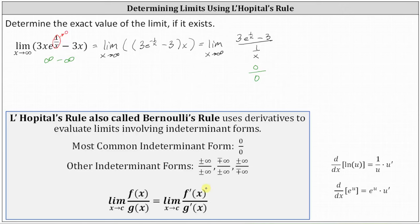Before we differentiate the numerator and denominator, let's review how to differentiate one divided by x. To differentiate one divided by x with respect to x, we write it as x to the power of negative one and apply the power rule of differentiation. We multiply by negative one and subtract one from the exponent, which gives us negative one times x to the power of negative two, or negative one divided by x squared.